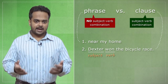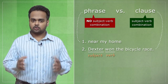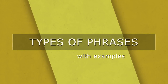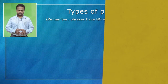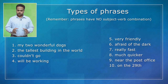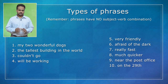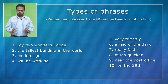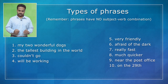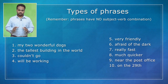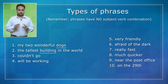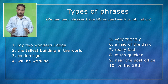Let me show you some more examples so that you can learn how to easily identify phrases and clauses. All the words you see on the screen are phrases — in all of these there's no subject-verb combination, and these examples show the most common types of phrases. For example, 'my two wonderful dogs' is a noun phrase focusing on the noun 'dogs,' and 'the tallest building in the world' focuses on the noun 'building,' so we say that these are noun phrases.